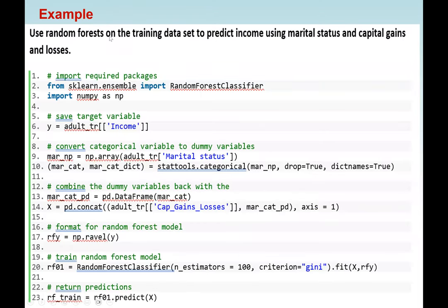Let's look at another example: use random forest on the training dataset to predict income using marital status and capital gains and losses. Here we have to import the RandomForestClassifier — Python has the random forest classifier package. We also need NumPy. We save our target variable, which is income from the adult training, as Y. Same as before, we convert the categorical variable to dummy variable using np.array on adult_training marital status, then use stat_tools.categorical with drop=True and date_names=True.